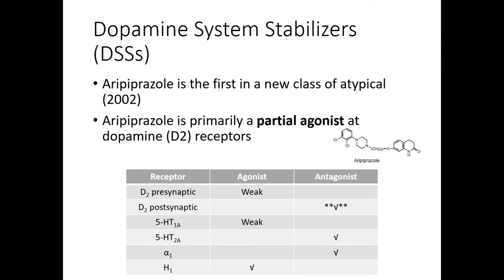This short recap is on dopamine stabilizing agents — dopamine system stabilizers — specifically aripiprazole. We are going to go through the concepts and pharmacology of aripiprazole again because it is a very important topic that is also personally difficult, so this will be a short reference for your study.